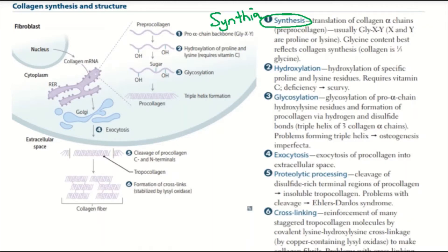In this step, pre-procollagen is formed, which usually consists of glycine followed by XY, where XY is proline or lysine. Next, 'hid' stands for hydroxylation — hydroxylation of specific proline and lysine residues.